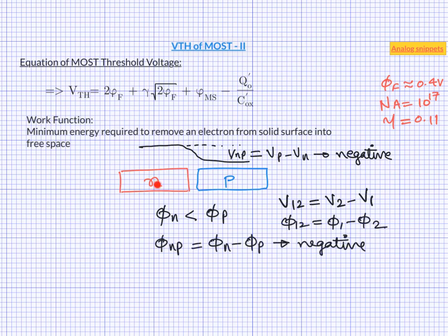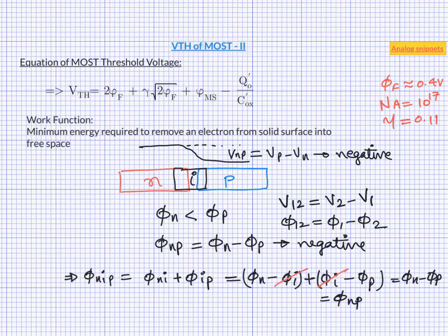Let us assume that n and p are not in the direct contact with each other, but there is another material, let us say intrinsic semiconductor in between. What will be the total work function difference of this combination? As it turns out, the total work function difference would be simply the work function difference of the first material and the last material. Any material in between will cancel out because it will come with the negative polarity in one expression and positive polarity in the other expression.